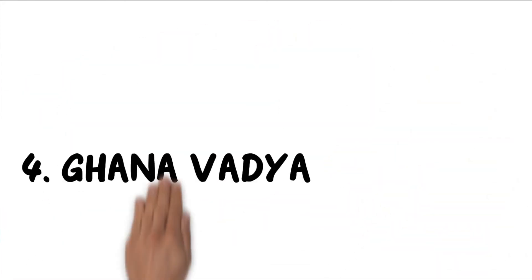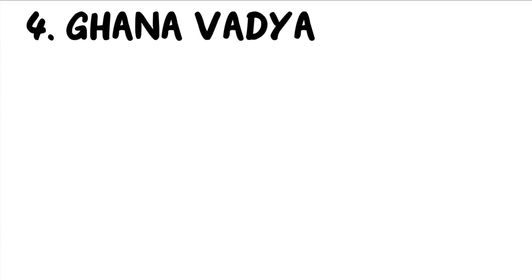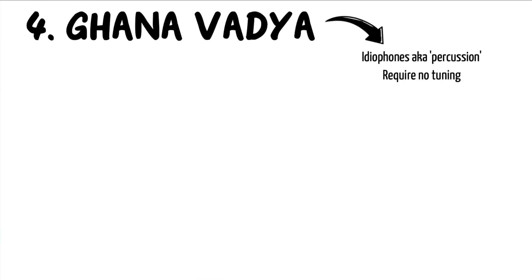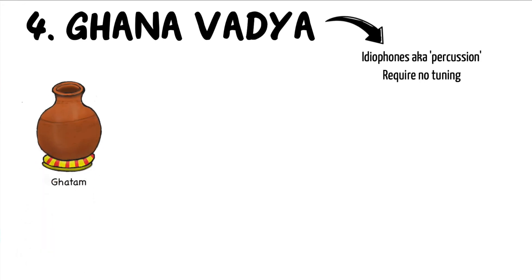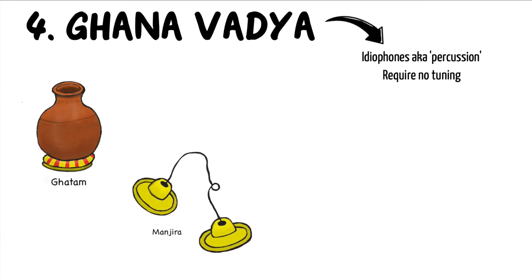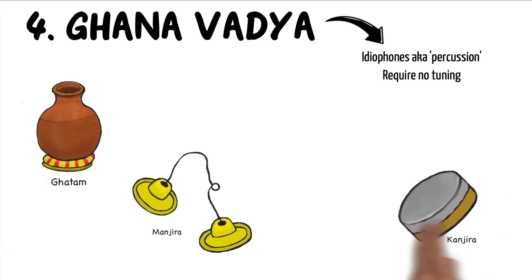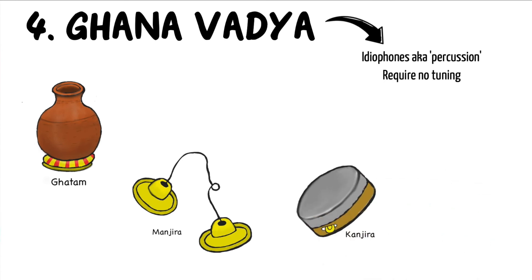For the last category, we have ghana vadya, also known as idiophones, which consists of percussion instruments aside from drums. These are made of metal, clay, or wood. They often require no tuning and are used as a side rhythm in addition to the membranophones. Some examples include the ghatam, the manjira, the kanjira, and the kartal.